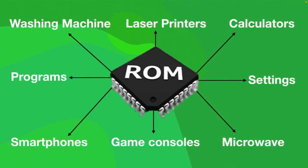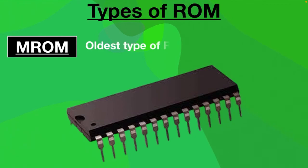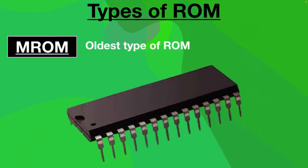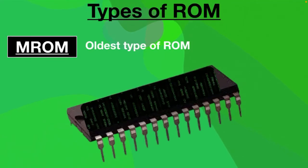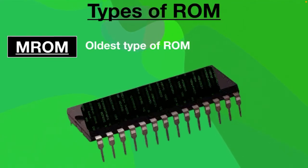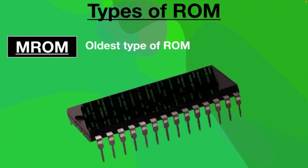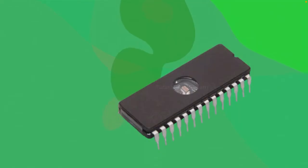However, there are some types of ROM where you can modify data. The first is M-ROM, Masked Read-Only Memory. It is the oldest type of ROM and has become outdated, so it is not being used anywhere in the world. In this type, data is stored at the time of manufacturing and cannot be modified, reprogrammed, or erased later. An example of M-ROM is a bootloader.